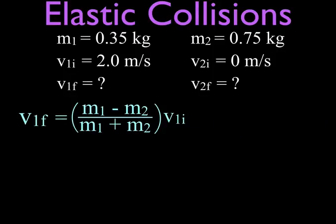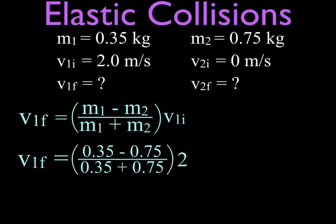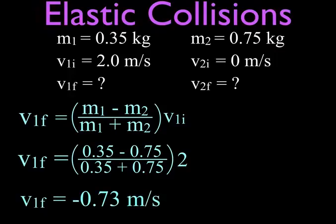Now we can plug our values in to the remaining term we have here. Mass number one is 0.35 minus 0.75, we add the two masses together, multiply that times the initial velocity of the first one which is 2, and we come up with the final velocity of the first ball, mass number one, is -0.73 m/s.